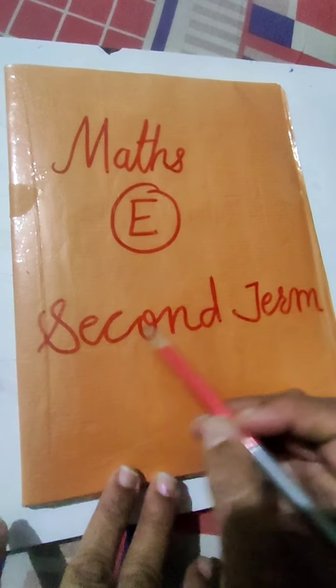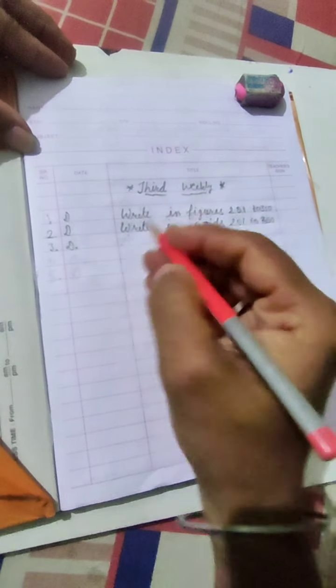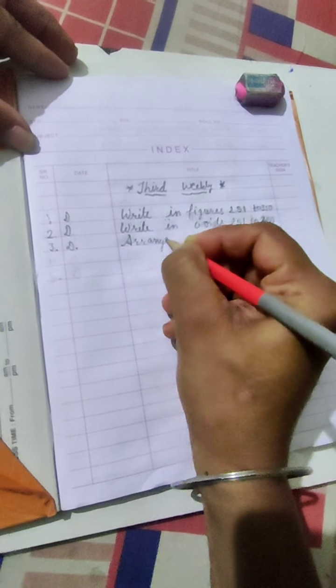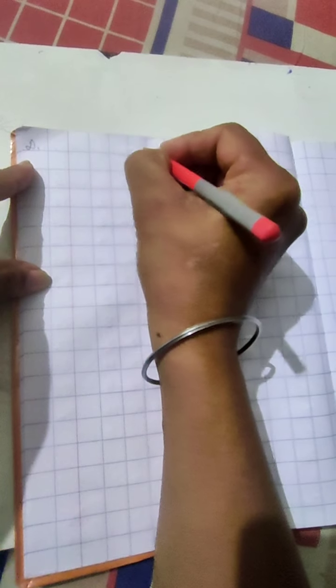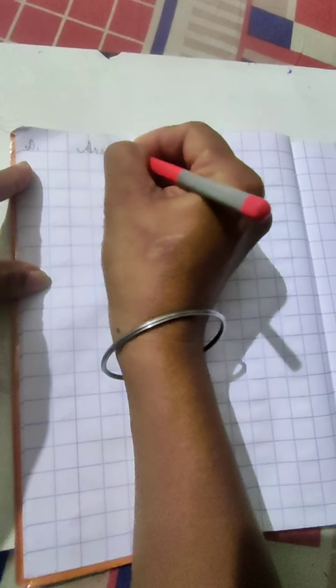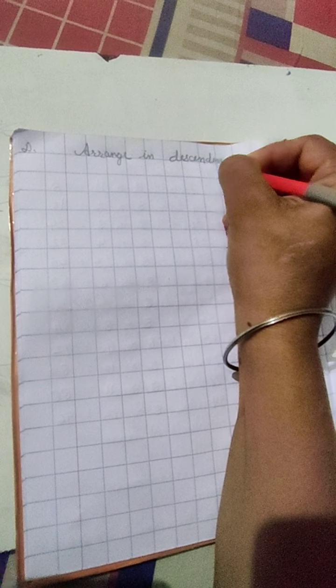Hello students, open your maths second term notebook and open your notebook to the next page. Write serial number 3 and today's date. In the title you have to write 'Arrange in Descending Order.' Now open your notebook's new page, write today's date in the corner, and write the heading 'Arrange in Descending Order.'